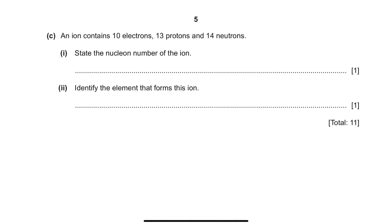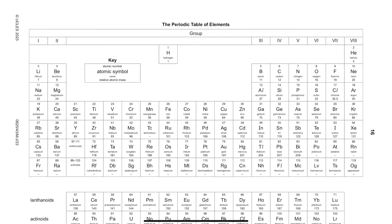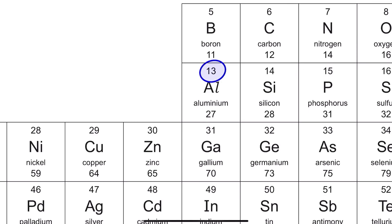Question C. An ion contains 10 electrons, 13 protons and 14 neutrons. Part 1. State the nucleon number of the ion. When showing the nuclide notation of an element, we will show the proton number at the bottom and its nucleon number at the top, which is the total number of protons and neutrons, which in this case is 13 added up with 14. So, your nucleon number of the ion is 27. Part 2. Identify the element that forms this ion. In order to identify this element, we have to look at its proton number. The proton number given was 13. Therefore, the element that we are looking for is aluminium.